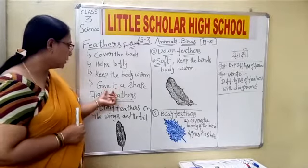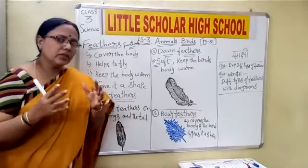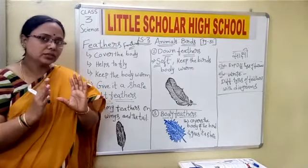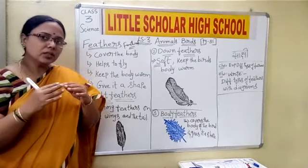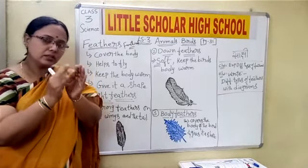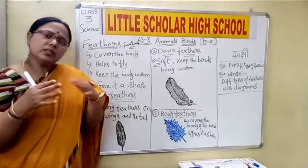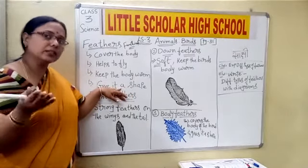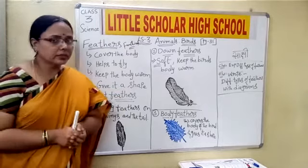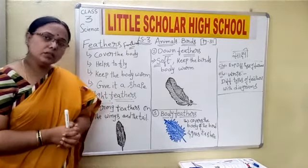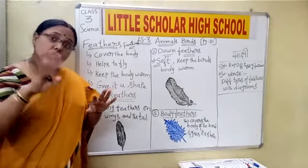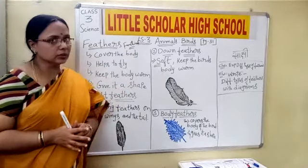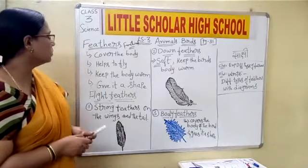The next point is that feathers give the bird its shape. We have seen different kinds of birds — some are very small, some are larger, some have a thinner front portion or a wider back portion. There are different kinds of shapes, and this is because of the arrangement of the feathers. The particular shape of the bird is due to the arrangement of its feathers. These are the functions of feathers.